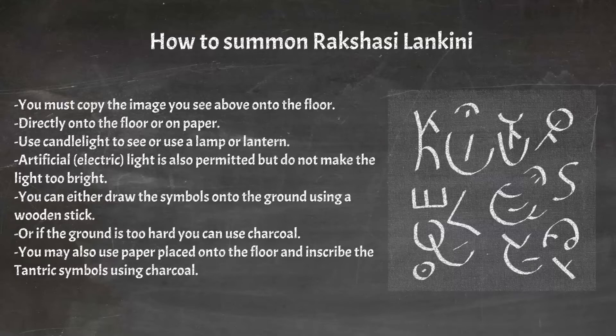This can also be done using candlelight to see, or using a lamp or lantern. Artificial electric light is also permitted, but do not make the light too bright. The method of copying can be done in a few ways traditional to various ayunist schools. You can either draw the symbols onto the ground using a wooden stick, or if the ground is too hard you can use charcoal. If you are inside your house you may also use paper placed onto the floor and inscribe the tantric symbols using charcoal.